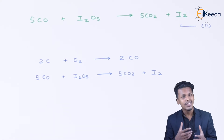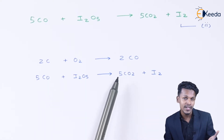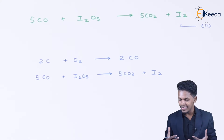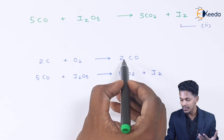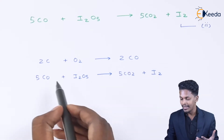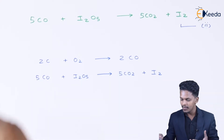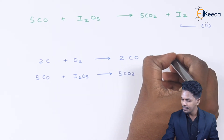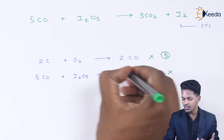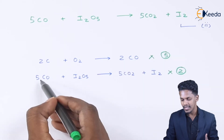We are concerned with the oxygen content, which is now present in the form of carbon dioxide. To balance these equations, we multiply Equation 1 by 5 and Equation 2 by 2, because we have to balance both the reactants and the products.